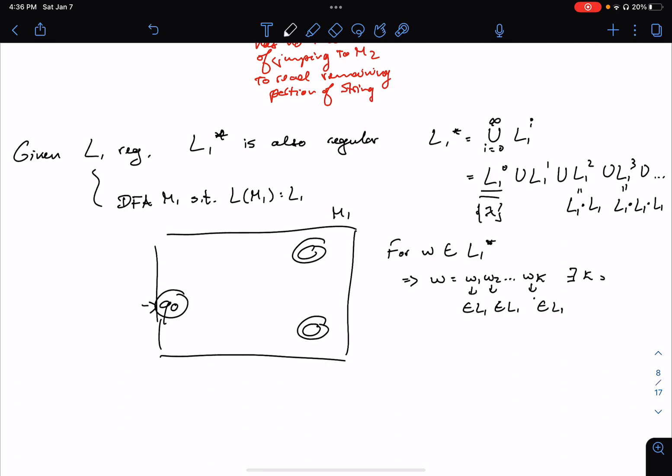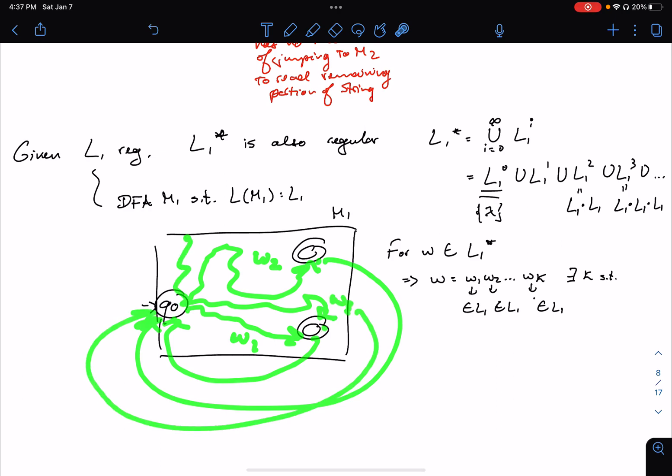So there exists some K, such that W is W1, concat W2, and so on, until WK. So that means that maybe W1 starts at Q0, then ends up in this state, and then maybe W2 goes here, then goes to this state. So this was for W1, this was for W2, then it goes back, and then it reads W3, it ends up in another final state, and then it goes back, and then again W4 goes to maybe this final state, then it goes back, and so on.